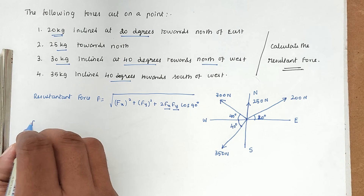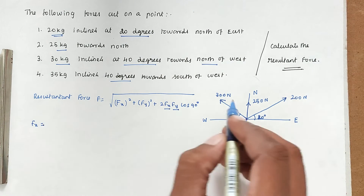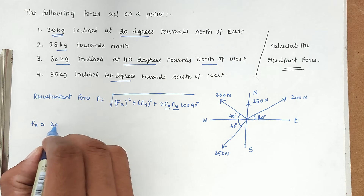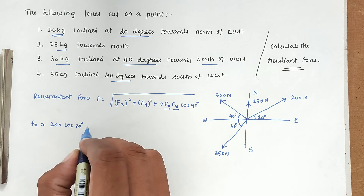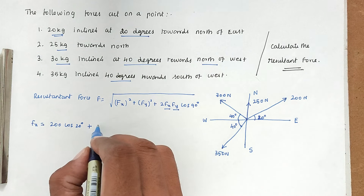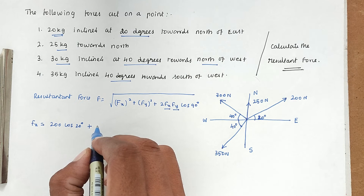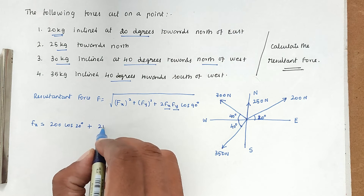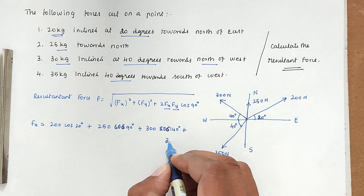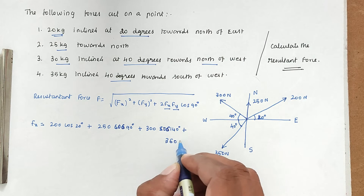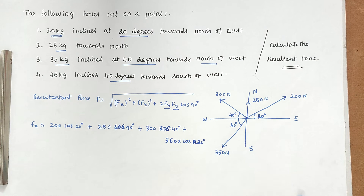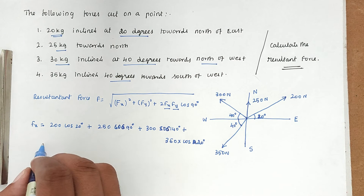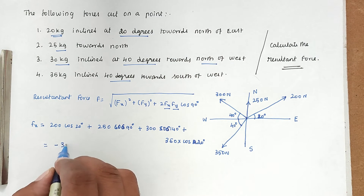For the horizontal force Fx: we take 200·cos 20° for the first force. The 250 N force is purely vertical so it contributes zero horizontally. Then we add 350·cos 220° for the fourth force. Solving this, we get Fx = −324.7 N.